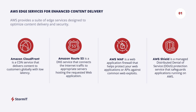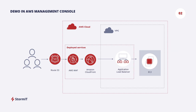Here I have all AWS edge services. Today we will use CloudFront CDN, which can help you cache content at the edge. We will also use Route 53 as a DNS service and AWS WAF as a firewall. I will show all of this in the AWS Management Console.